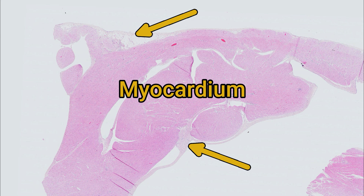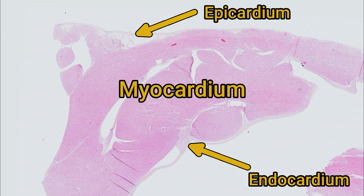These surfaces are the endocardium and the epicardium. The endocardium is the inner surface lining the ventricles and the atria, and is continuous with the endothelium of blood vessels. The epicardium is the outer surface.